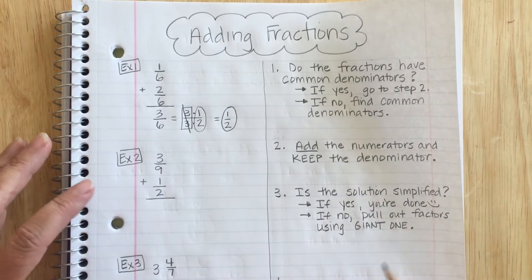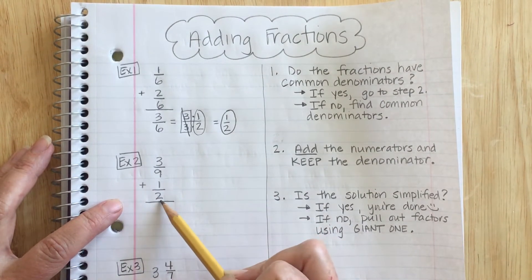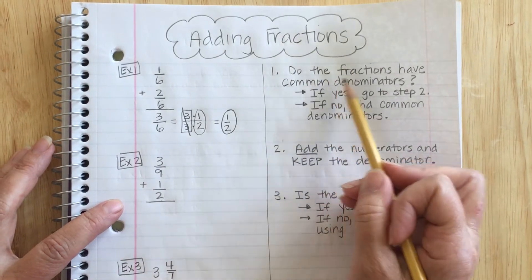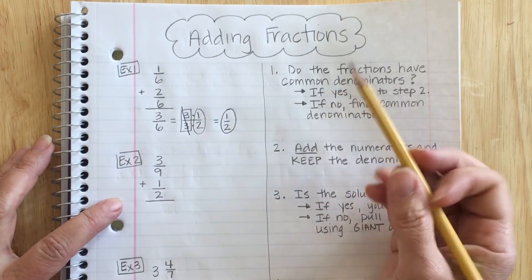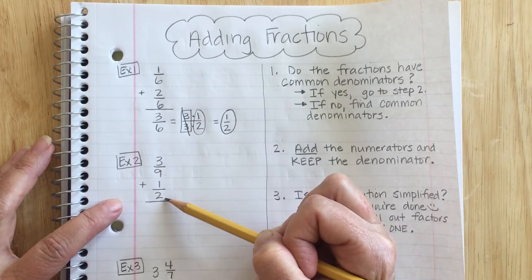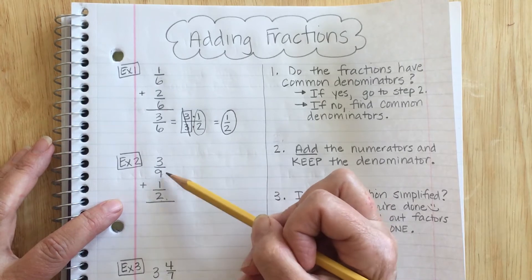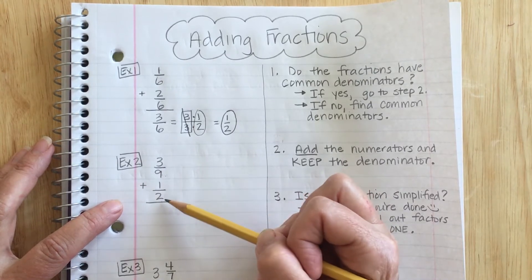In example 2, if I take a look, I've got 3/9 plus 1/2. My first question is, do the fractions have common denominators? Well, this fraction has ninths and this one has halves. So no, I need to find common denominators. So I need to find my least common multiple. What number do both 9 and 2 go into?